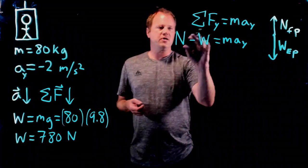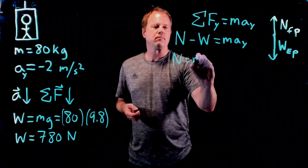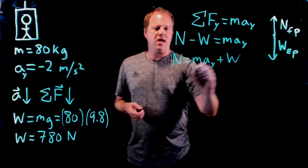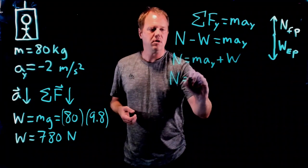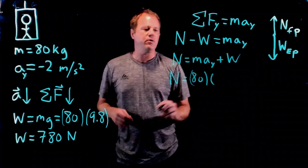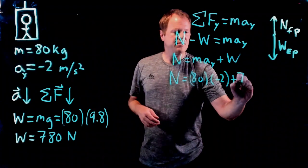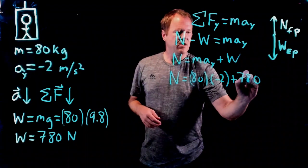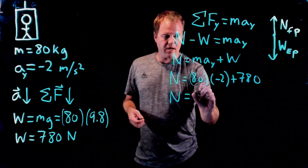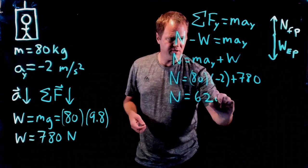I add weight to both sides and then throw in the numbers. I have mass of 80, acceleration down in the negative direction, and then the weight is 780. I throw that into my calculator—or maybe you can even do this in your head—and I get 620 newtons.